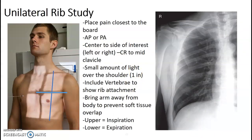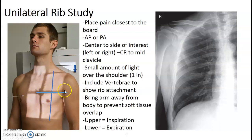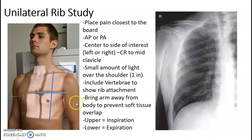When looking at the site of interest — whether AP or PA — center at mid-clavicle. Have a small amount of light over the shoulder. I tend to have light just over the spine and just past the chest wall. Bring the arm away from their body — you don't want the soft tissue to overlap.